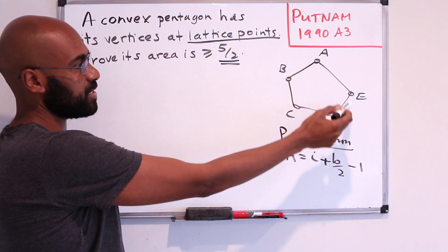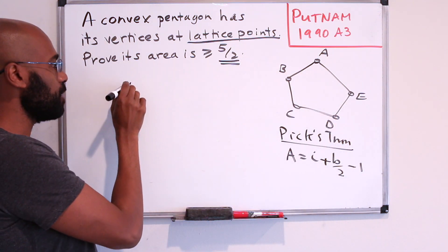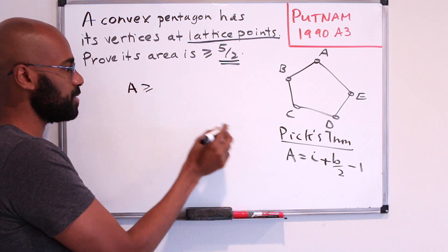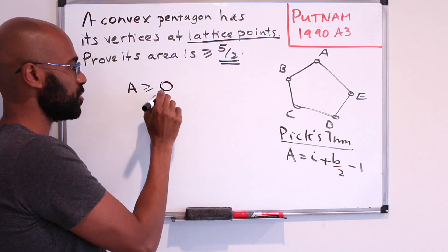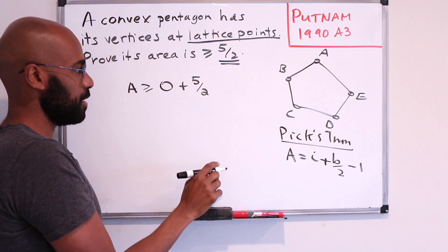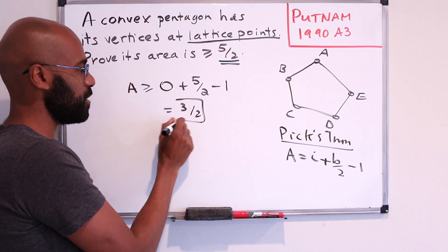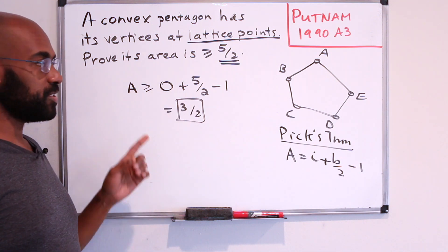For example, we know that there are at least 5 boundary points. So just off the bat, we know that the area is at least, well we don't know anything about interior points, so this is at least 0, but we do know there are at least 5 boundary points, so it's at least 5 halves minus 1. So the area by default is going to be at least 3 halves, but we want to increase this value somehow.